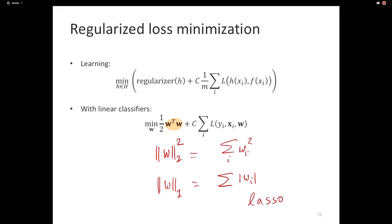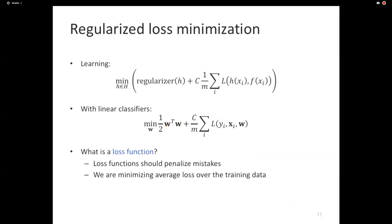So we have this — that's all I'm saying about regularizers. But we still have that other term that I did not expand on: loss. The question is, what is a good loss function? A loss function is a function that penalizes mistakes — or more generally, it penalizes the hypothesis for being different from the true function on an example. The goal is to minimize the average loss.